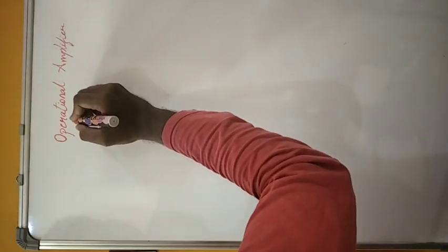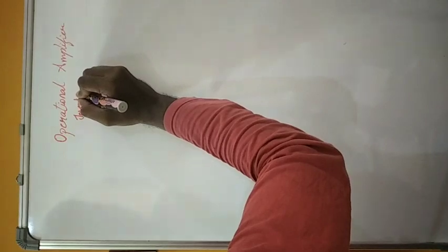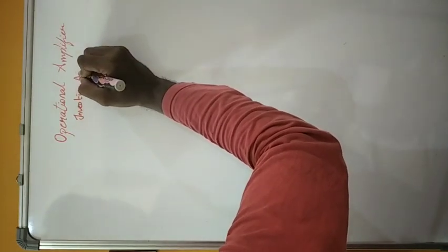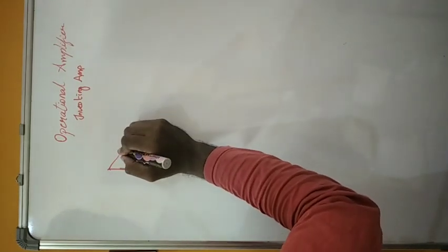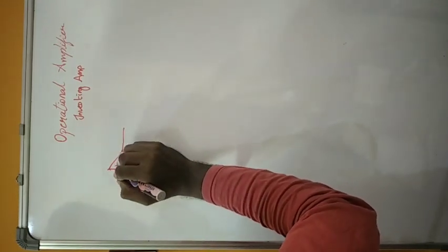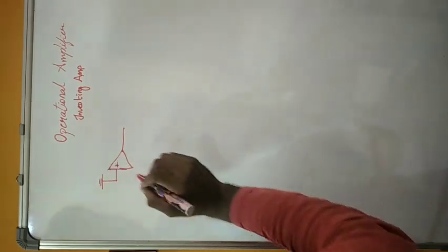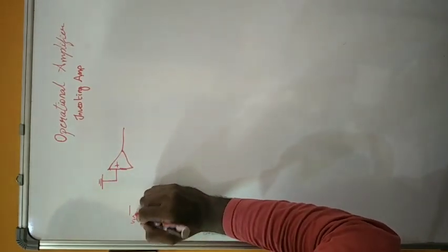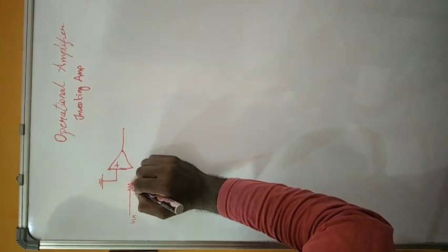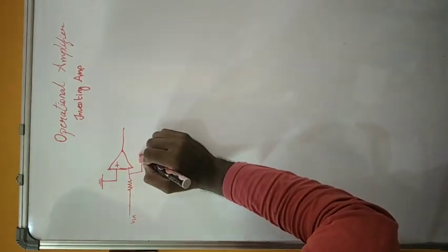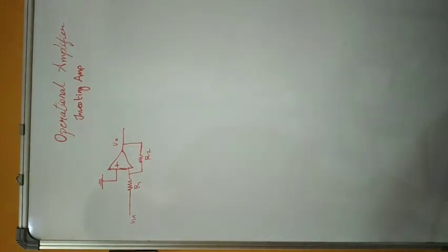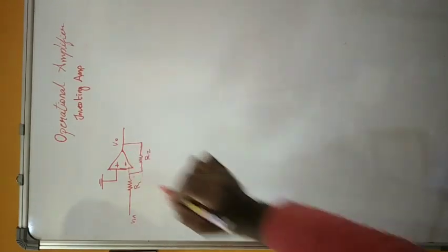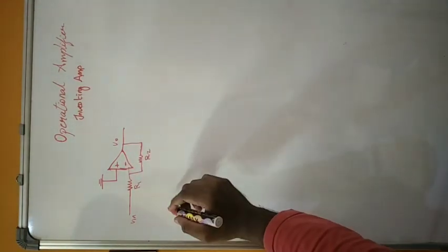Now we will see the inverting amplifier. We take an op-amp — for the inverting amplifier, the non-inverting terminal is grounded, the inverting terminal receives the input, and the feedback resistor is connected. This is your inverting amplifier. Now we will try to find the gain of this inverting amplifier.